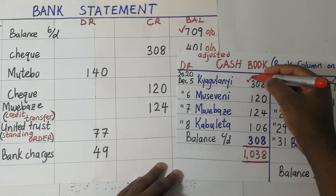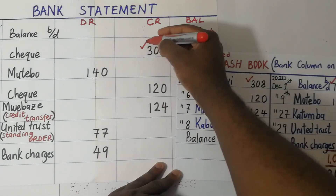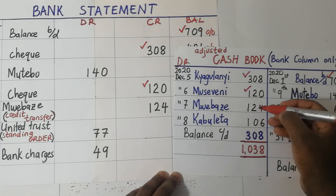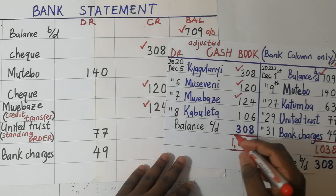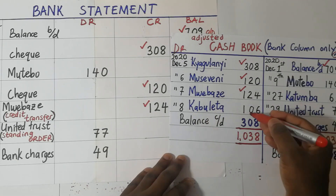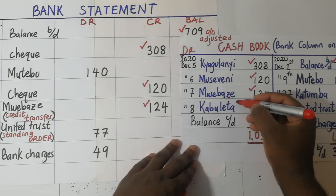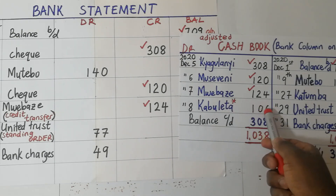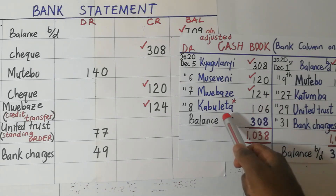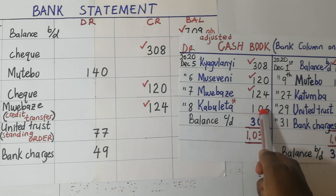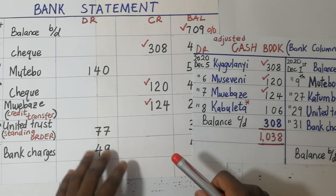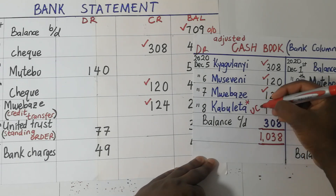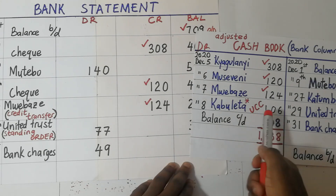Chagulani — we have a check we received from Chagulani 308, 308. We have a check we received from Museveni 120, 120. Then we have a check we received from Mwebaze 124, 124. Then we have a check we received from Kabuleta 106. This one is not reflected on the credit side, so we put a star there. We received this check from Kabuleta and recognized that we received this money in our cash book; however, we took this check to the bank but at the time of receiving this bank statement, the bank has not yet credited our bank statement. So the Kabuleta check is what we call an uncredited check.